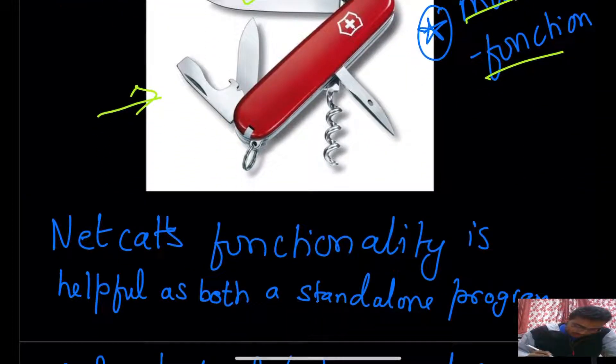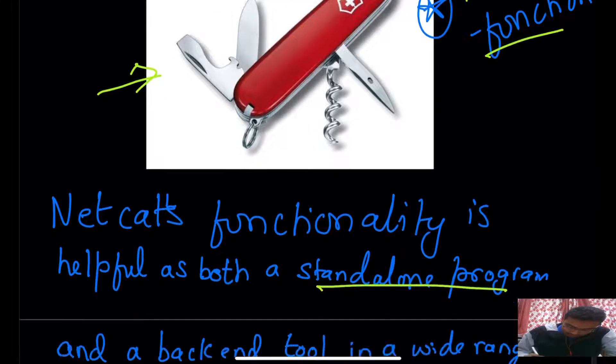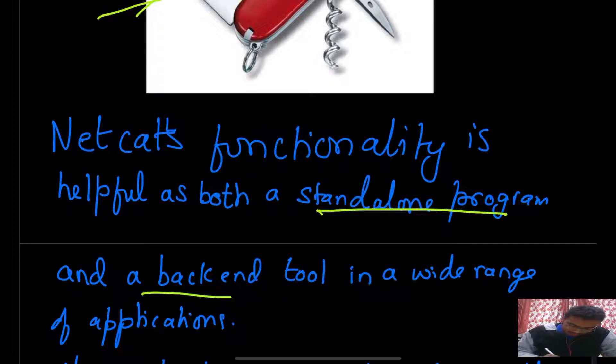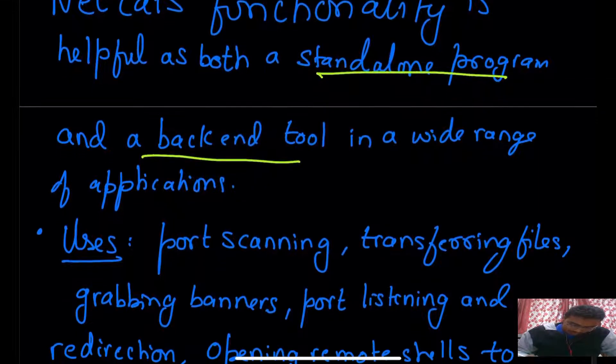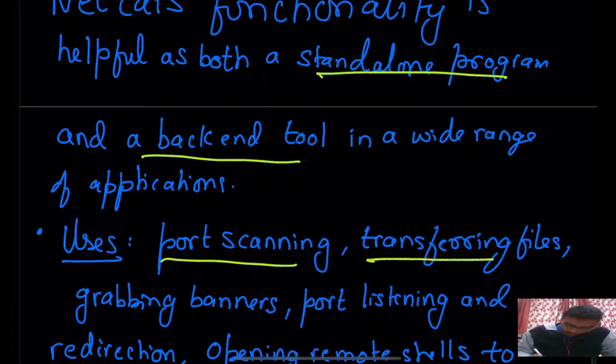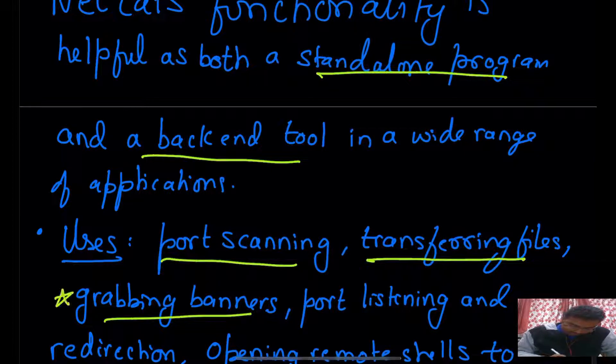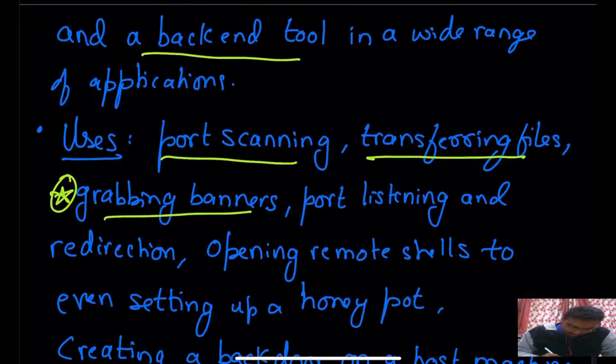Let us see what these functionalities are. Netcat functionality is helpful as both a standalone program as well as a backend tool in a wide range of applications. Its uses are: it is used for port scanning, transferring files, grabbing banners. Let us see what basically grabbing banners mean.